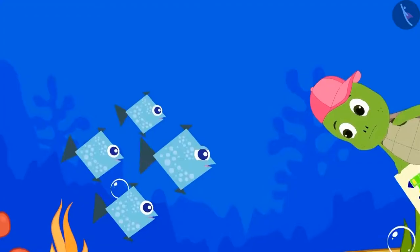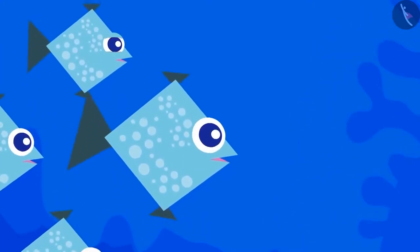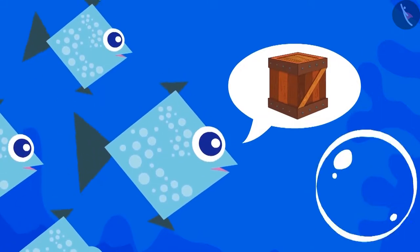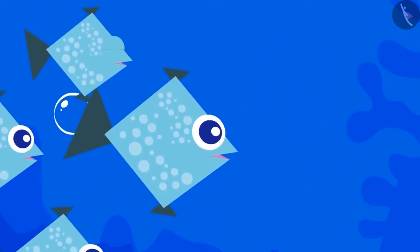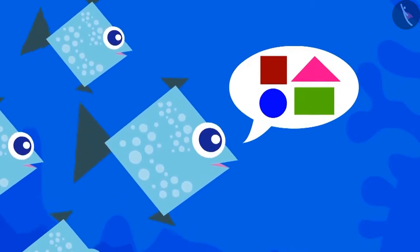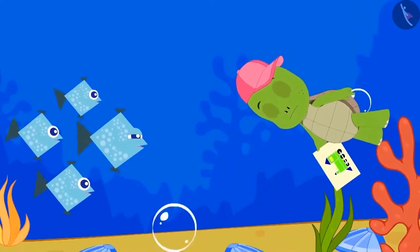The fishes told Tufan that they have hidden his toy in a box. If he can make a picture of those fishes using these shapes, then they will take him to that box.